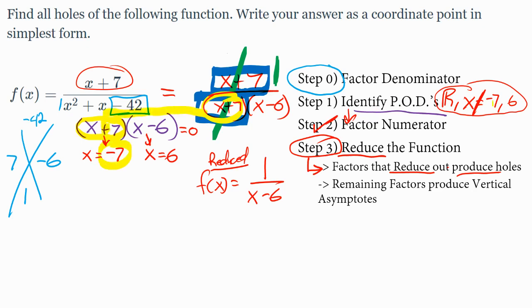So my negative 7 point of discontinuity is a hole, and then the remaining factor was the 6. That produces a vertical asymptote, which is not the question.